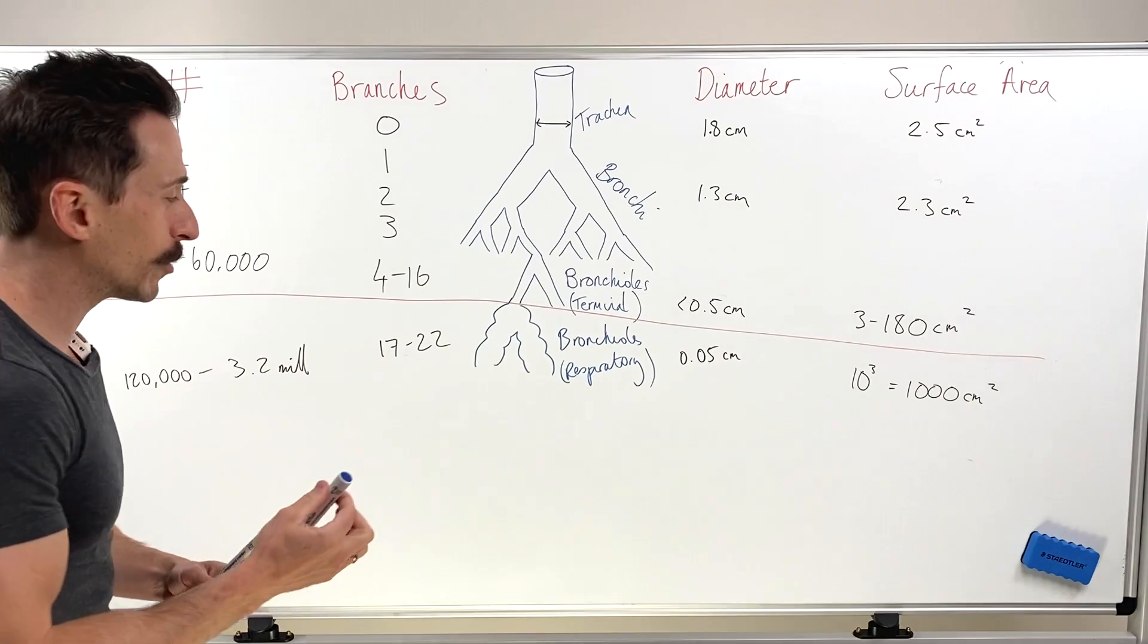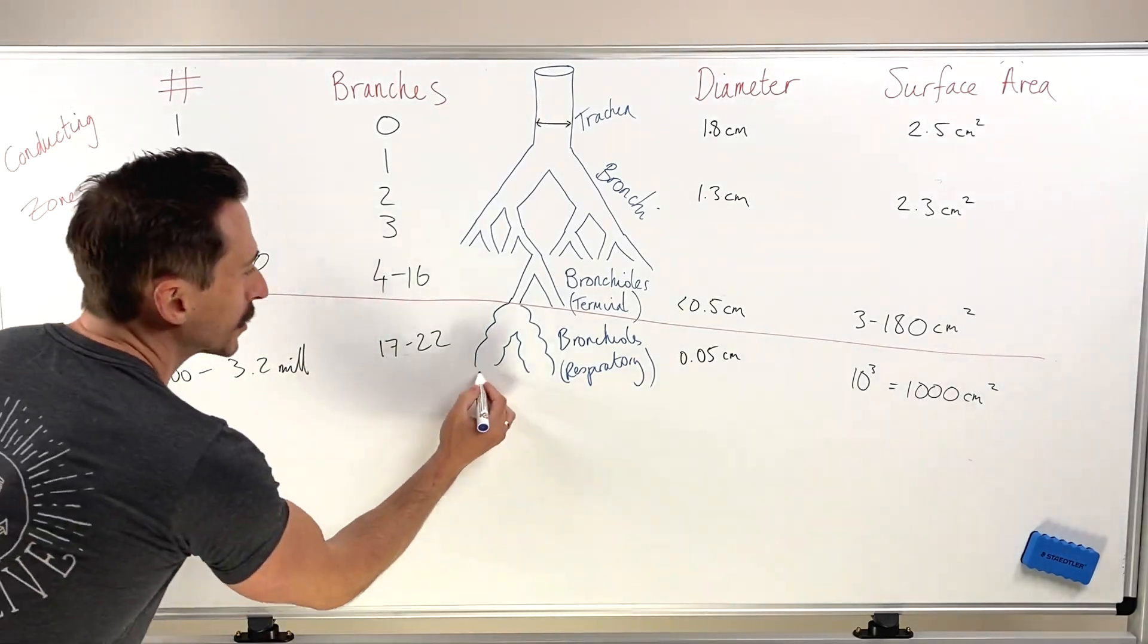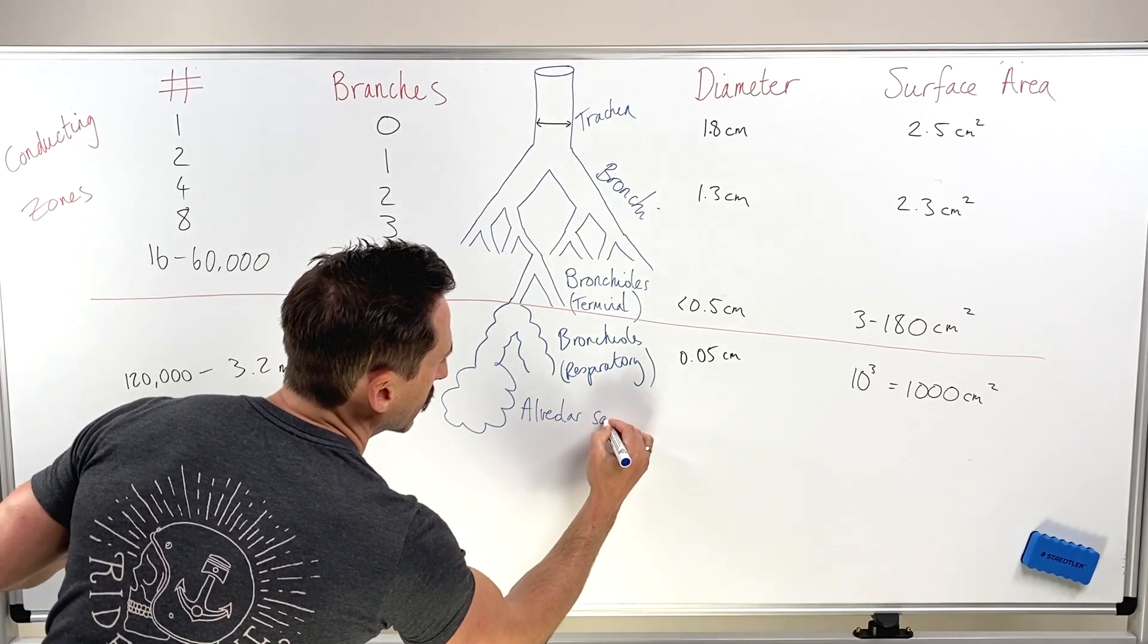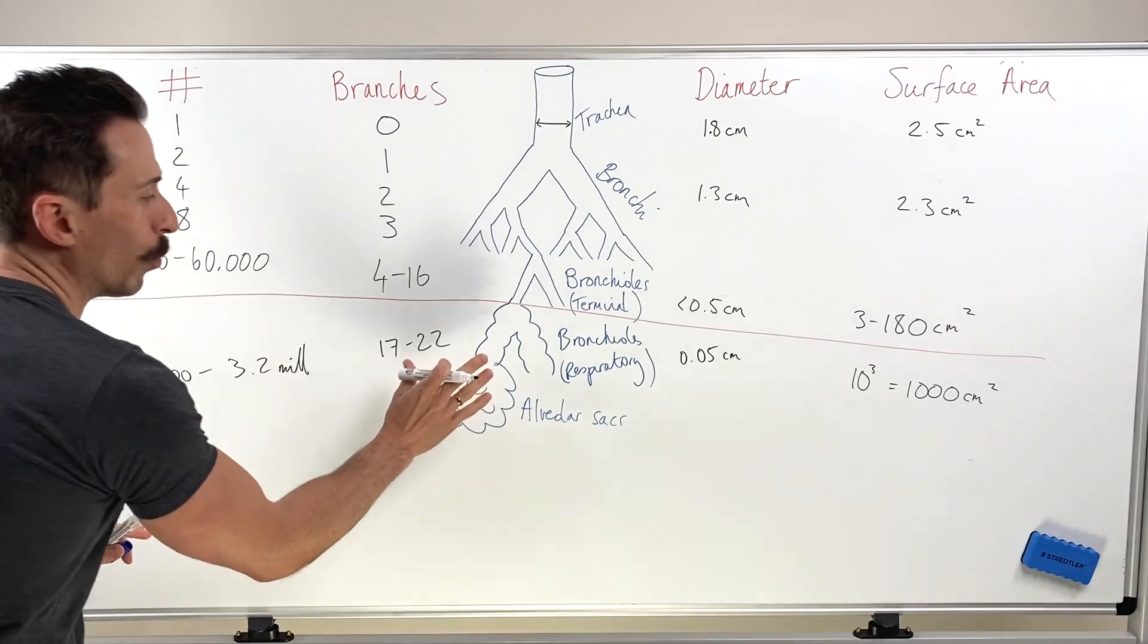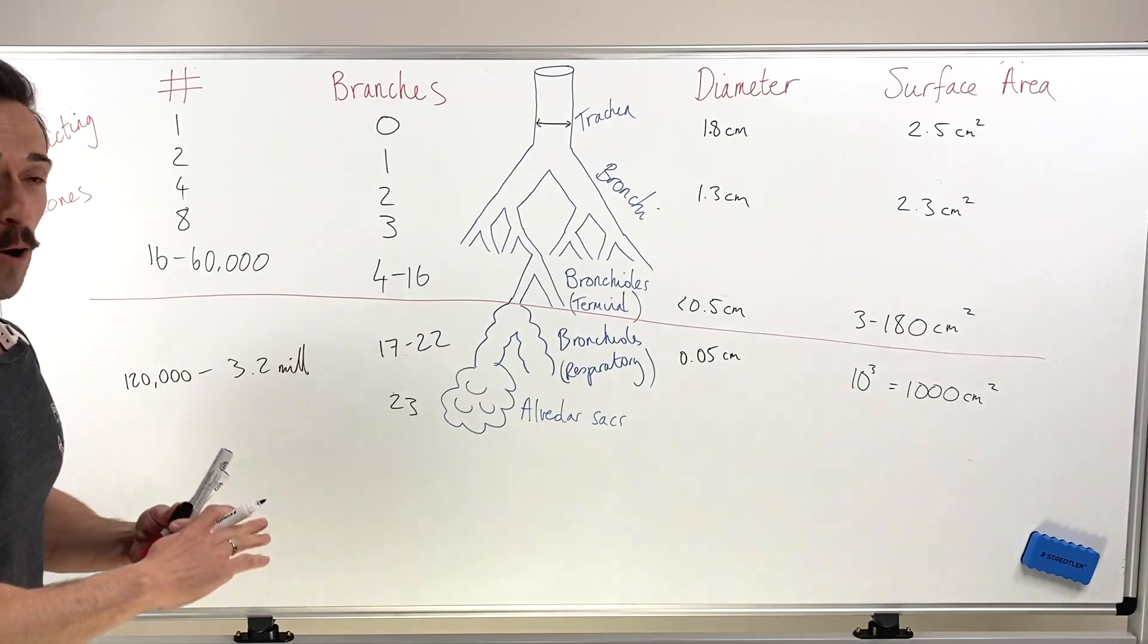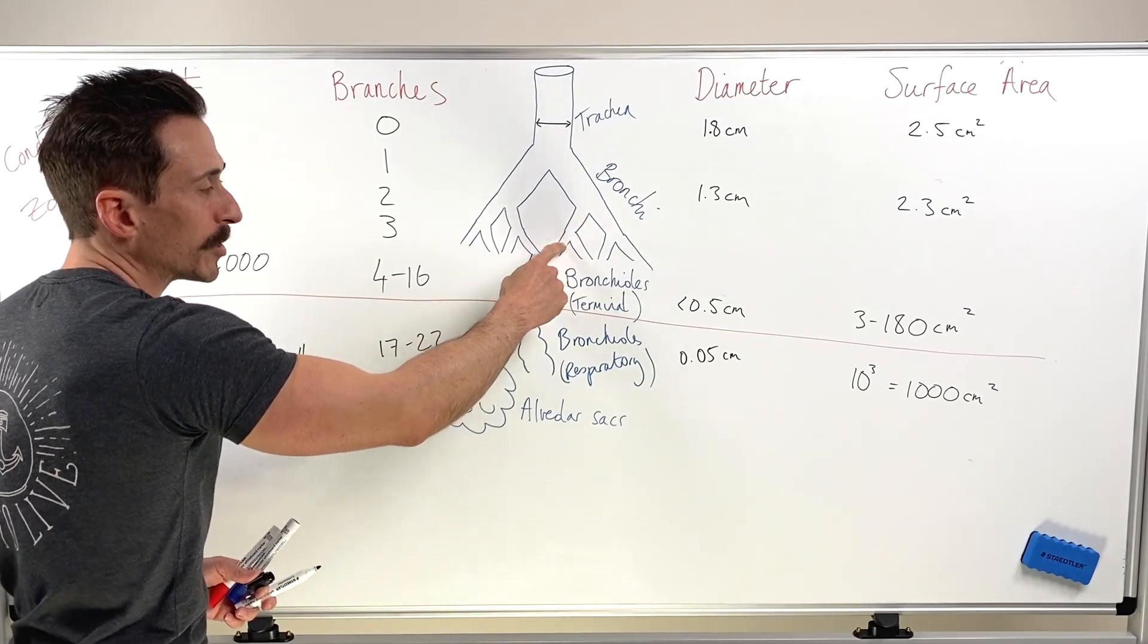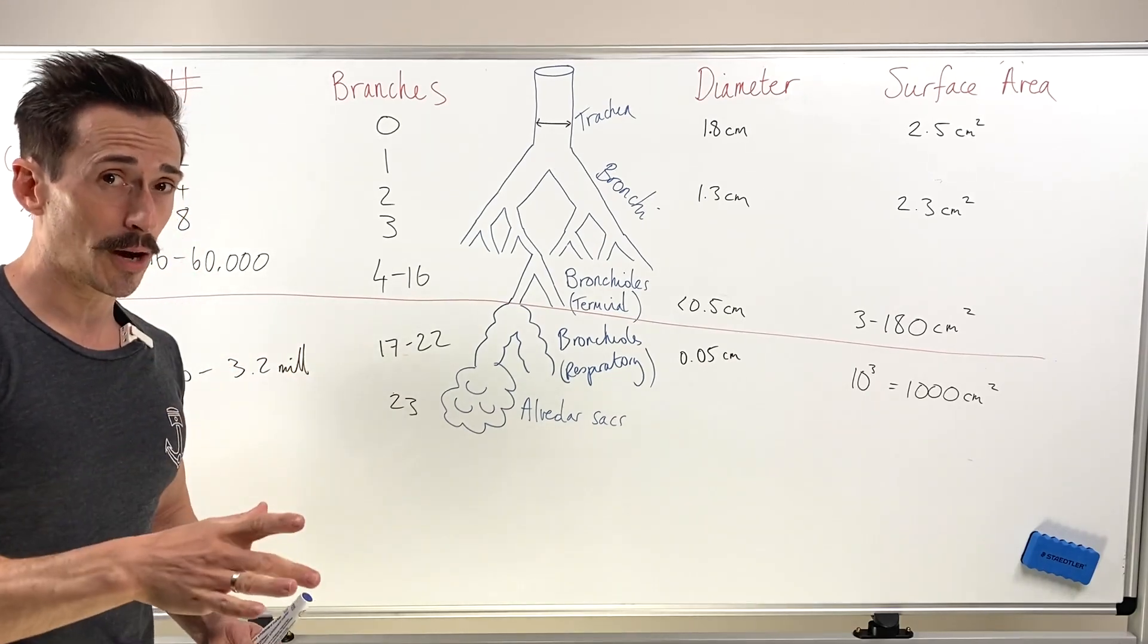We've gone from 2.5 centimeters squared to 1,000 centimeters squared here at the respiratory bronchioles. But we're not finished yet. We still need to go to the alveolar sacs and then the individual alveoli. So the next step is the alveolar sacs. Here's the alveolar sacs. They contain the individual alveoli. Now the alveolar sacs, this is the 23rd branch. This is the end of the whole thing. So from the trachea, these pipes branch once, twice, three times, four times, all the way down to 23. So it only branches 23 separate times.